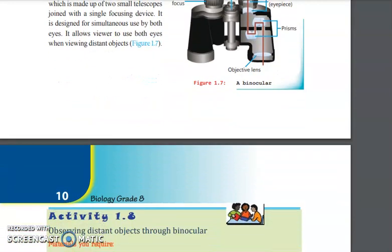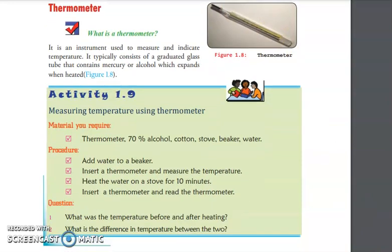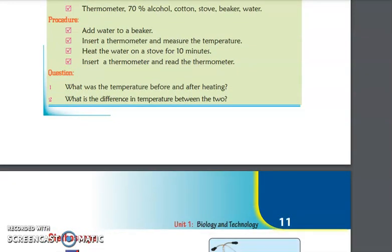The next one is thermometer. Thermometer is a temperature indicator. It consists of a graduated glass tube that contains alcohol or mercury. When exposed to a hot body, the mercury or alcohol expands, and this expansion is an indicator of the body's temperature.